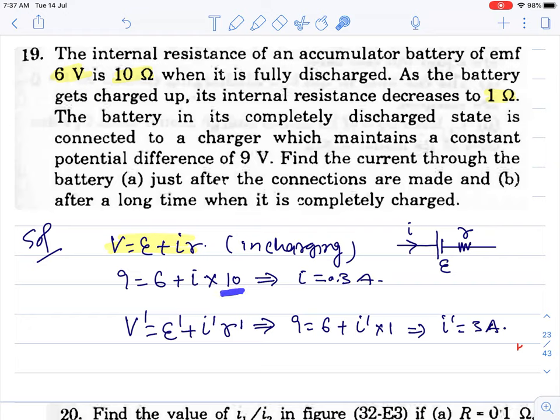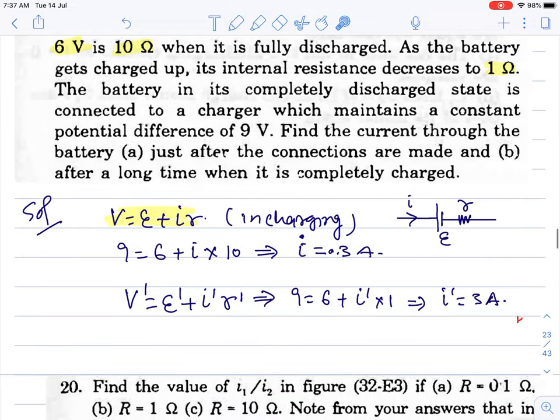Second case: when it's charged, internal resistance drops to 1. Put the values - both remain the same. Current calculation: it equals 3 ampere. In the first case it's 0.3 ampere.